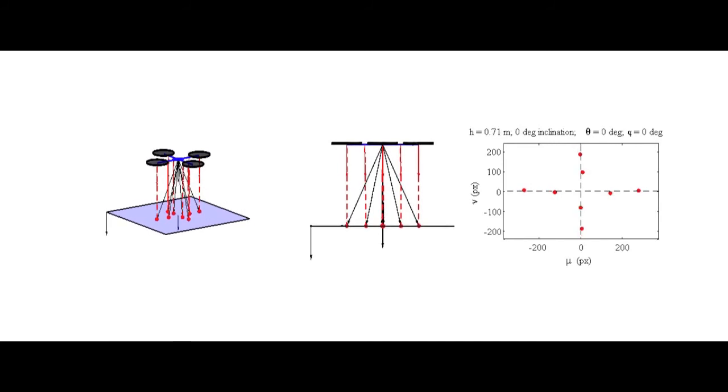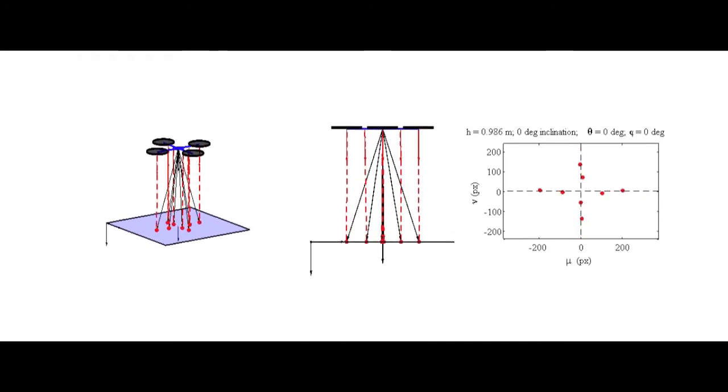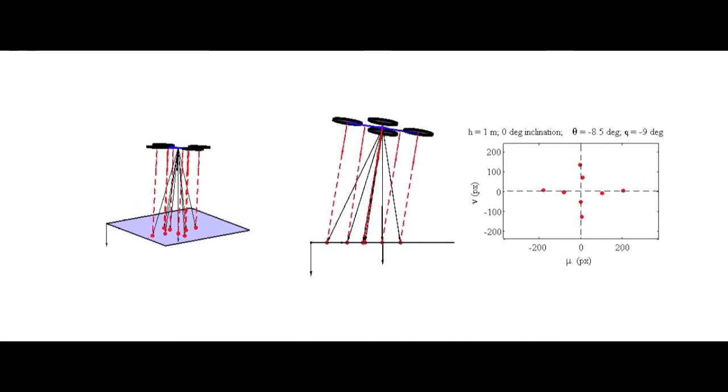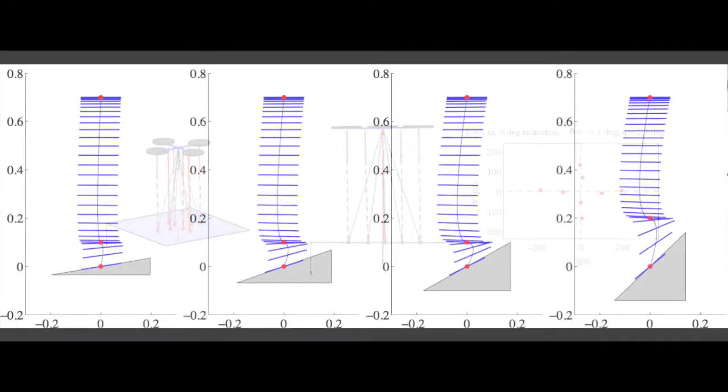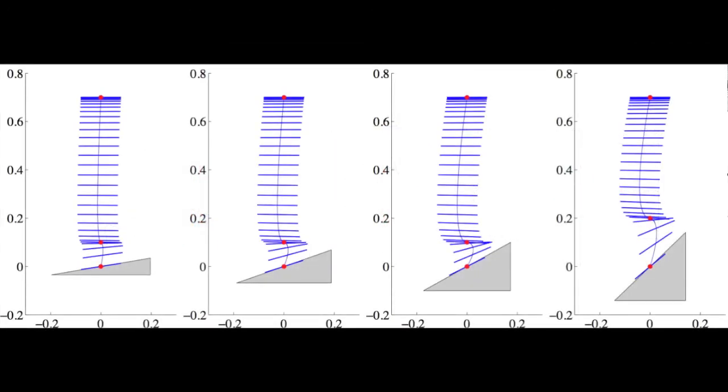The 2D coordinates are passed to a non-linear least squares estimator to yield an estimate of the UAV altitude and the normal vector defining the ground plane. Subsequently, this information can be used to generate a safe landing trajectory.